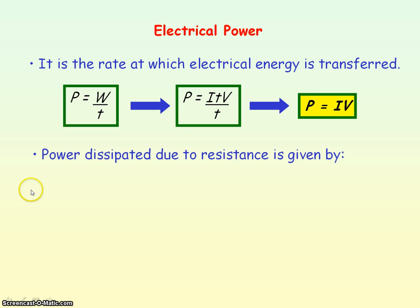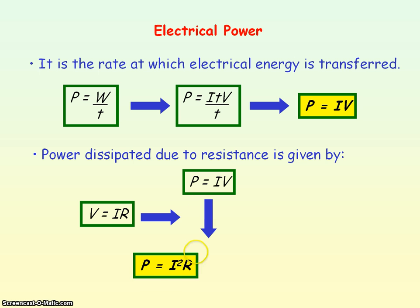If we have resistance, then power will be dissipated due to it. Dissipated means used up. We know electrical power equals current times voltage, and voltage equals current times resistance. If we substitute for voltage into our equation for electrical power, we get I times IR, so electrical power equals I squared R.